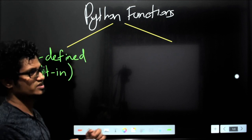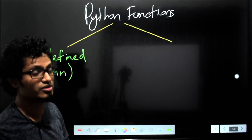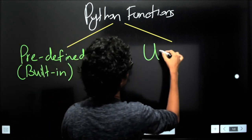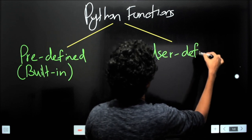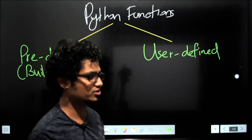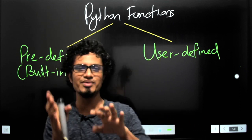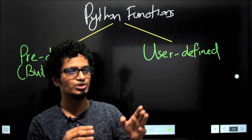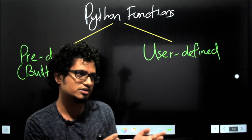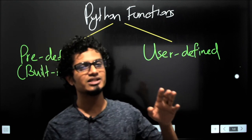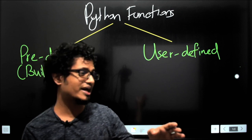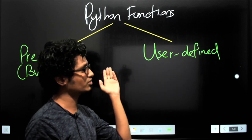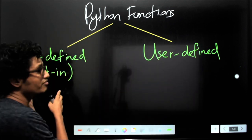Built-in functions are already created and available — we just have to use those. And then we have user-defined functions. These are actually like ready-made and tailor-made clothes. Predefined functions are like ready-made clothes; you just buy and use them. Whereas if you need a perfect fit, you go for tailor-made ones — those are like user-defined functions.